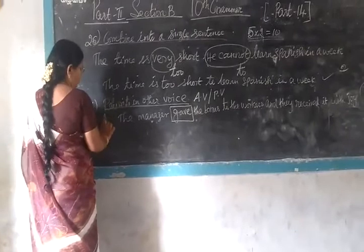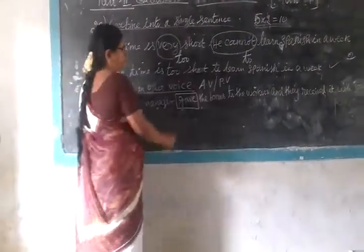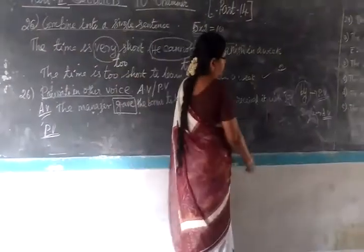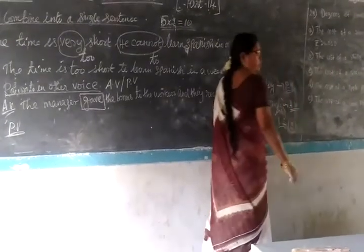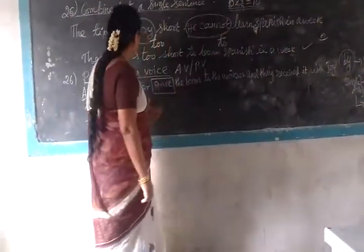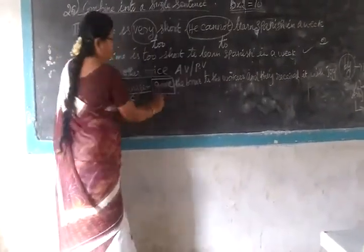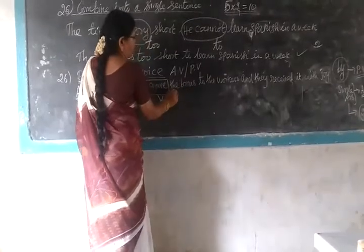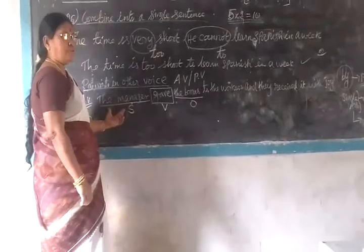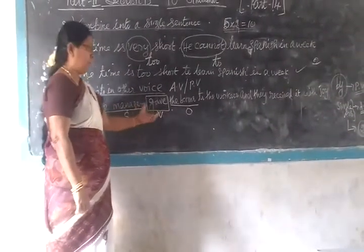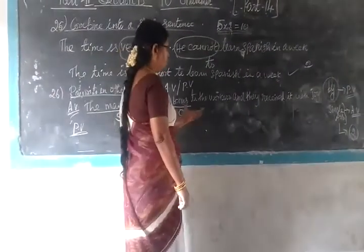So you are going to change it to passive voice. When you change to passive voice, the single verb will become double verb. This is one method. And you are using the preposition 'by'. Here the subject is 'the manager', verb is 'gave', object is 'bonus'. This is the sentence structure.